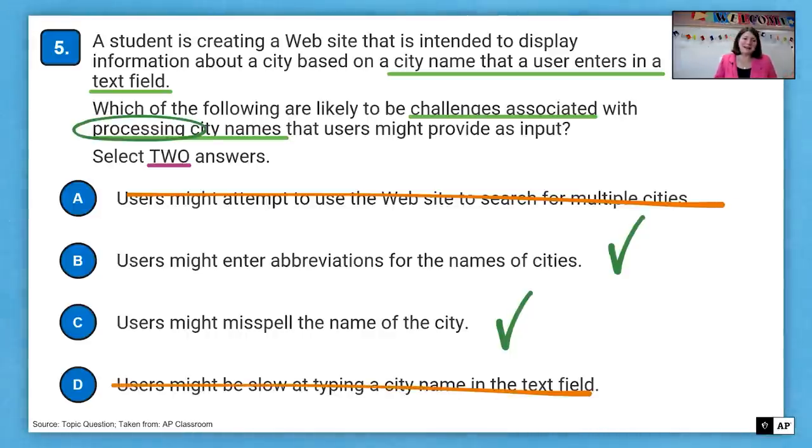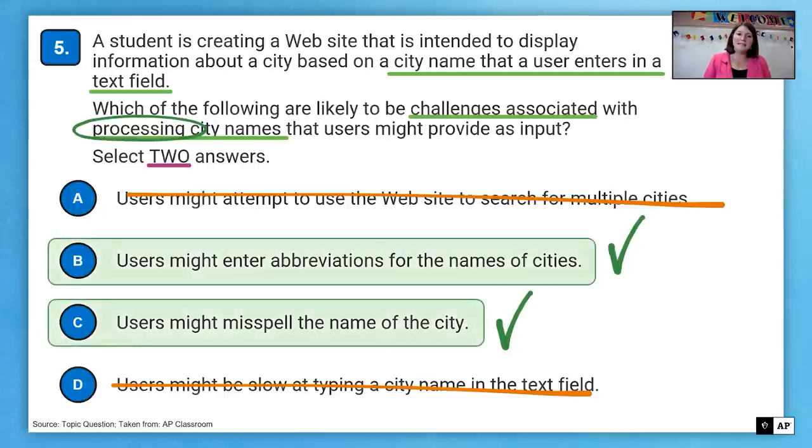If they're slow at typing, it doesn't matter. We're still just trying to process it. So our two answers here would be B and C because abbreviations and misspellings would cause an issue with processing it.